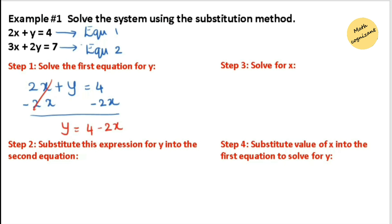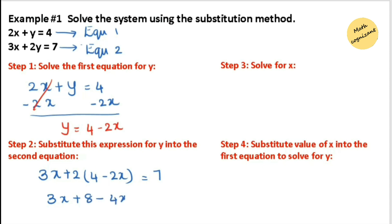Now we are substituting this value of y into one of the equations. I'm choosing the second equation: 3x plus 2 times y, where y equals 4 minus 2x, equals 7. The next step is to use the distributive property and simplify. 2 times 4 equals 8, and 2 times 2x equals 4x. Now we need to simplify the whole equation.